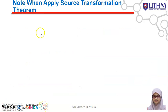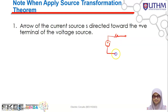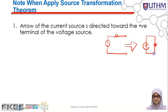Before we go to the examples, take note that when you apply the source transformation theorem, the arrow of the current source must be directed toward the positive terminal of the voltage source. So let's say you have a voltage supply with positive and negative terminals and a resistor — when you want to transform it to the current source, the arrow of the current source will point toward the positive terminal.